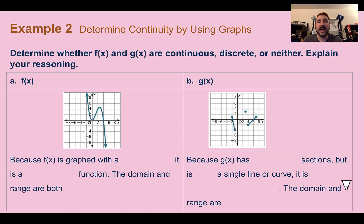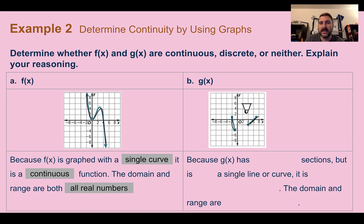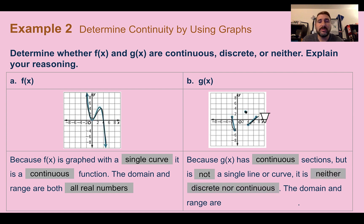Example two: determine continuity by using graphs. Determine whether f(x) and g(x) are continuous, discrete, or neither. For f(x), I can see the graph is connected by a curve with no gaps — because it's graphed with a single curve, it is continuous. The domain and range are both all real numbers. For g(x), we can see there's part of a line here, part of a line here, and a single dot — it has continuous sections but not one single line or curve. It's bits and pieces, so this would be neither discrete nor continuous. The domain would just be intervals of values based on what is given.